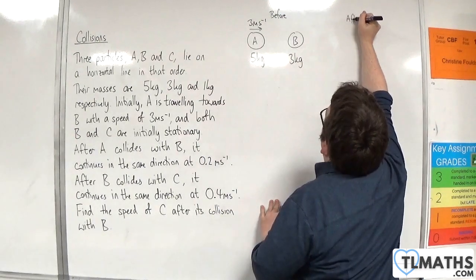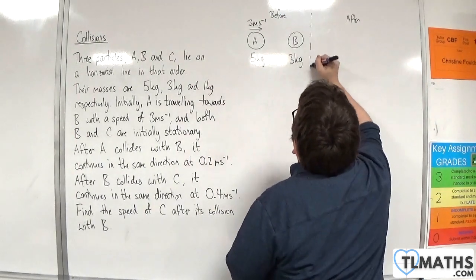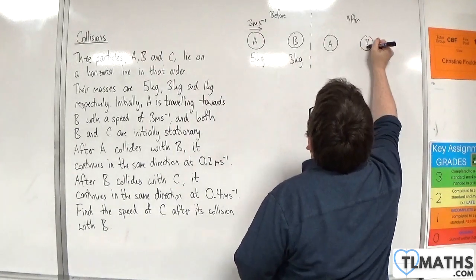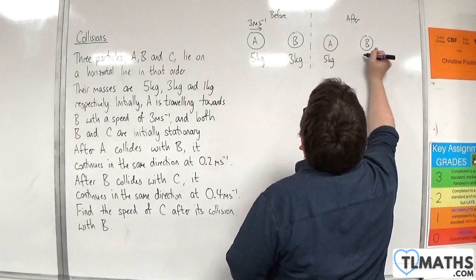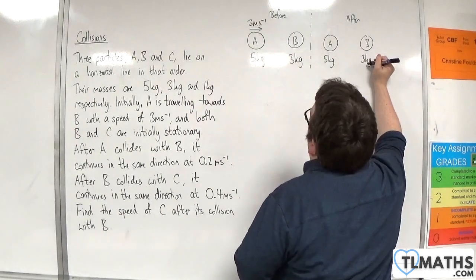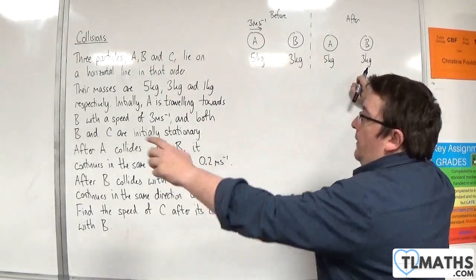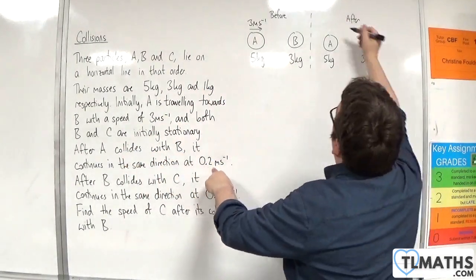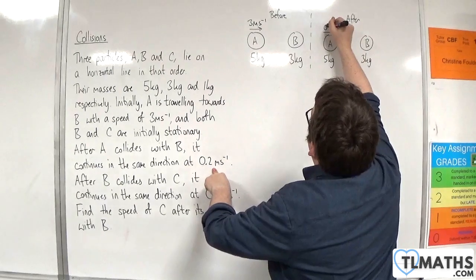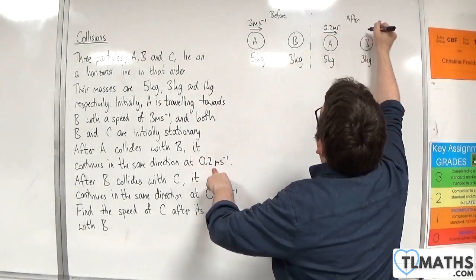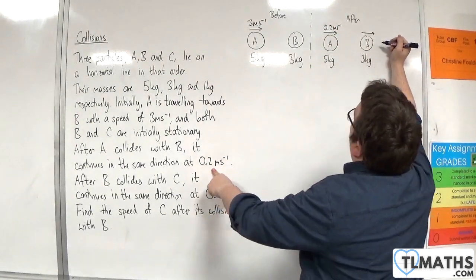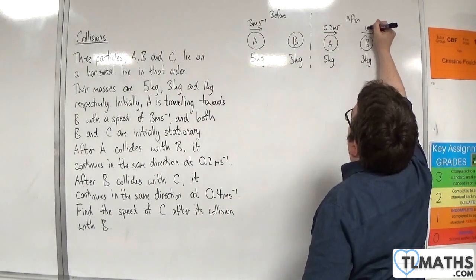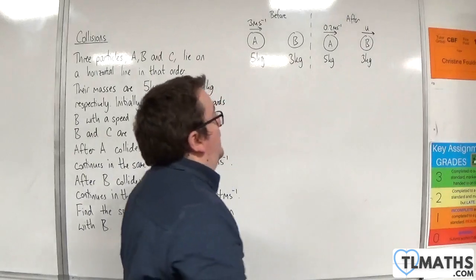Now let's look at what happens afterwards to particles A and B. We know that after A collides with B, it continues in the same direction at 0.2 meters per second. So I need to find the speed of B. Let's call that U meters per second.